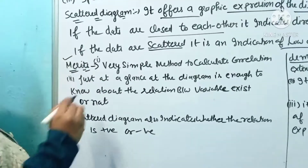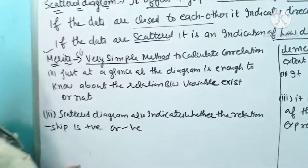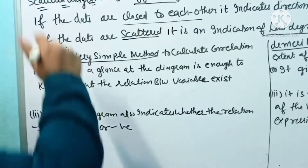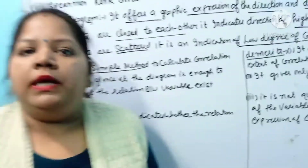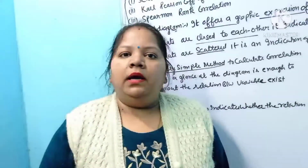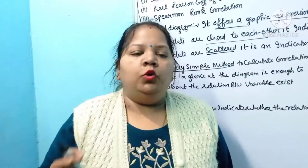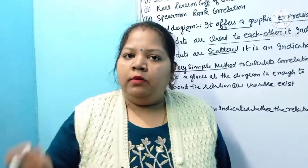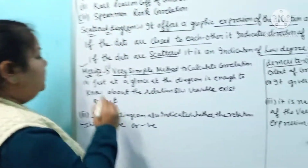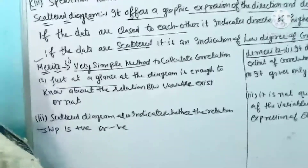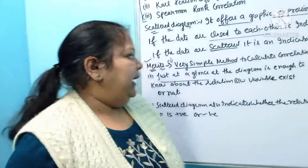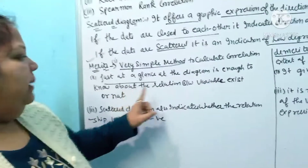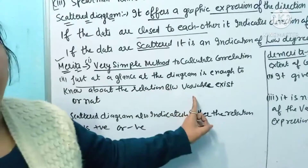Now we will see what the scatter diagram is. The very simplest method to calculate correlation among the three methods is the scatter diagram. Scatter diagram is a very simple way to calculate or assess the correlation. Just at a glance, what will it mean? Just at a glance, from one diagram, we can be clear whether the variables are related or have no relation.